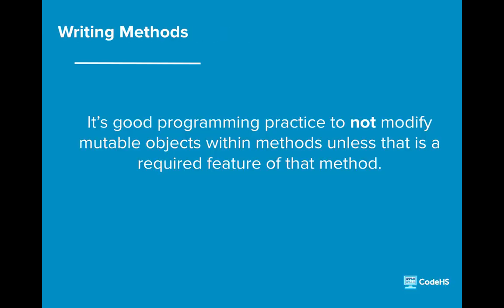Generally speaking, it's good programming practice to avoid altering objects within methods unless the method specifically calls for alterations to the object. Accessor and getter methods make obvious changes to objects, but most methods should not attempt to make changes unless it's explicitly necessary.